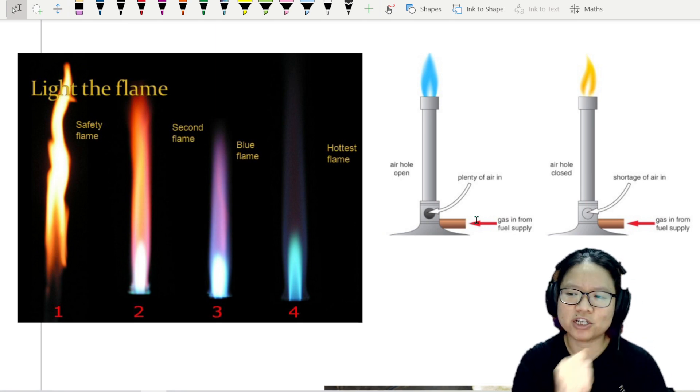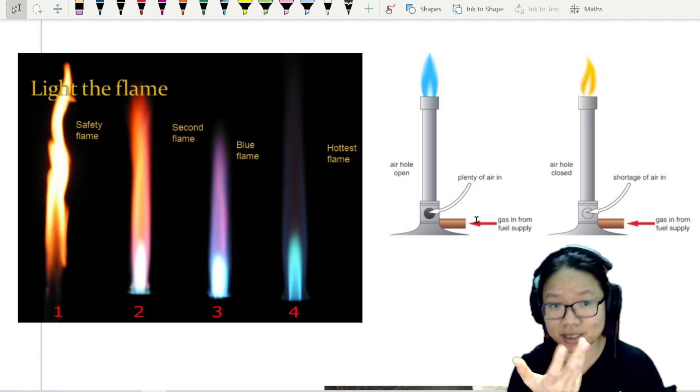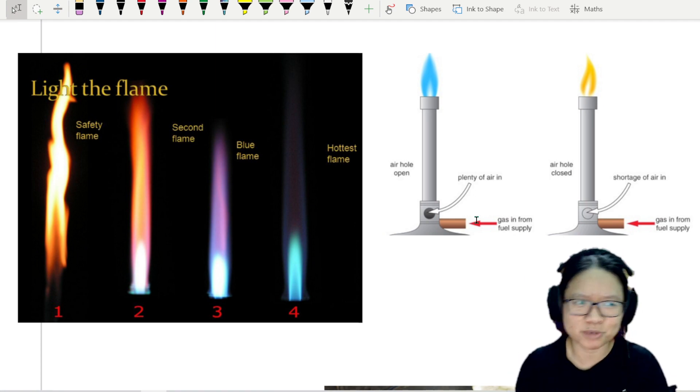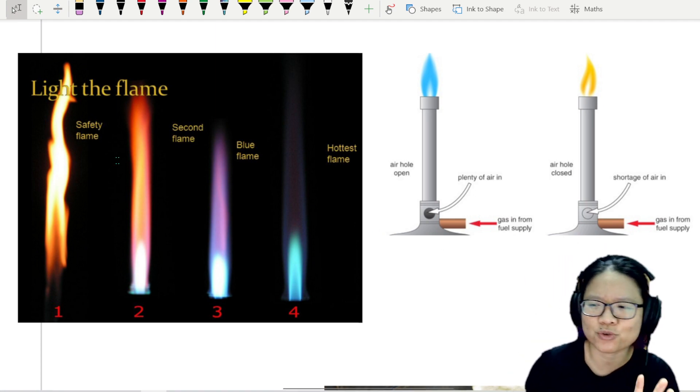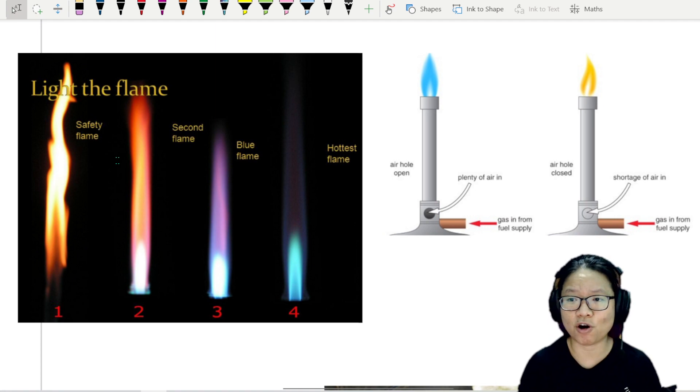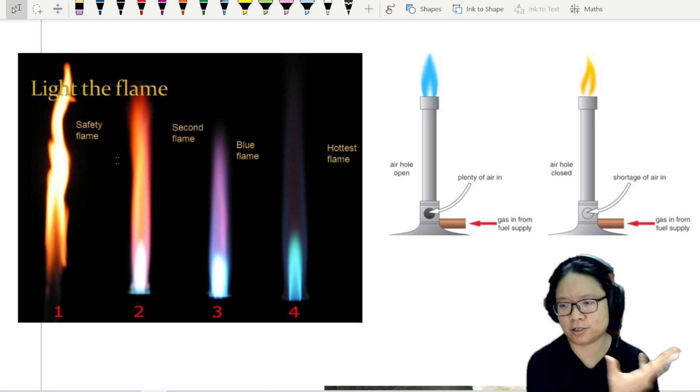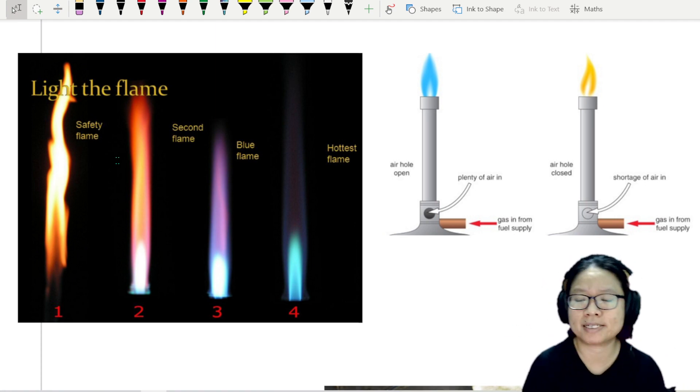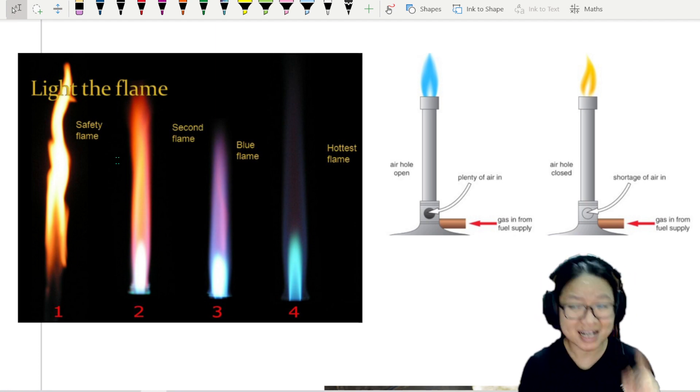But what is the relationship between color that we see, blue and yellow and maybe some tinges of reddish orange, and the temperature of the flame that is happening inside your Bunsen burner? First question.